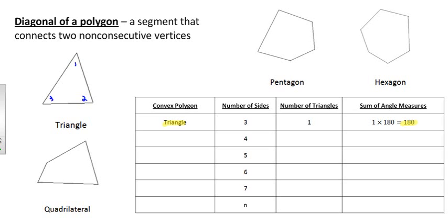We can do the same thing for any number of sided polygon. To do that, we're going to draw a diagonal. The diagonal of a polygon is a segment that connects two non-consecutive vertices. If I look at this quadrilateral and pick a vertex, I'm going to draw all the diagonals in from that vertex. Two sides are already drawn in, and the one that's not is my diagonal. Connecting it to the other vertex creates two different triangles.